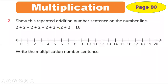Here is question number 2. In this question we already have all the additions written — we don't need to write them again. So let's show this repeated addition on the number line. This number line starts from 0 and stops at 20.